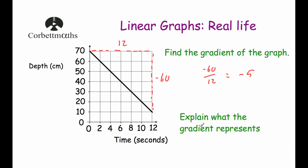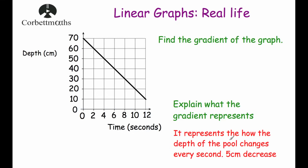The question then says: explain what the gradient represents. The gradient is how much the line goes up or down for every one unit across. Because our horizontal axis is in seconds, it means every second the depth of the water goes down by 5 centimetres. The gradient represents the rate at which the depth of the pool changes — a 5 centimetre decrease every second.